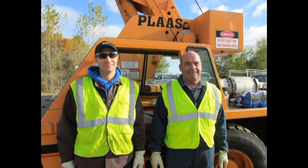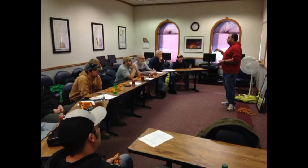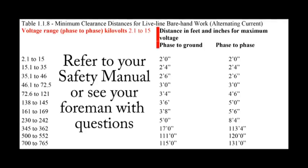Responsibilities — Safety Director: The Safety Director is responsible for developing and revising the written aerial lift safety program. In addition, the safety director will be responsible for the training requirements and maintaining documentation of training. Table 1.18 shows minimal clearance distances for live line bare hand work with alternating current. Voltage range phase to phase: 2.1 to 15 kilovolts. Refer to the safety manual or see the foreman with questions.